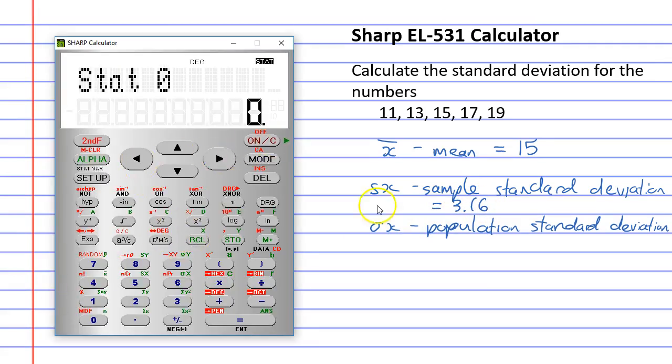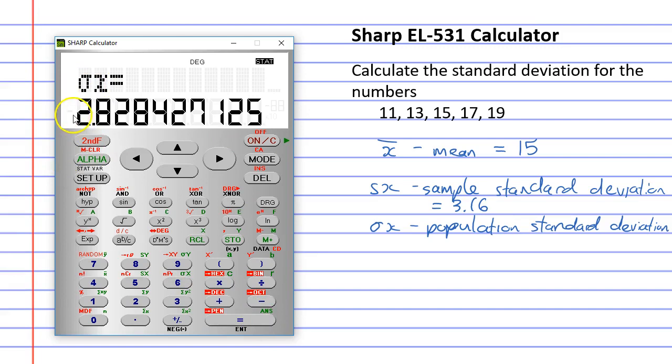And finally, we'll do our population standard deviation, alpha 6. And you'll see the Sigma X symbol equals, and that'll be 2.83.